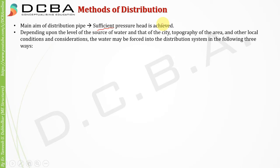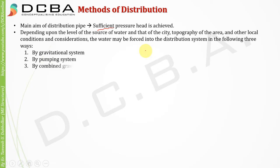Depending upon the level of the source of water and that of the city, topography of the area, and other local conditions, water may be forced into the distribution system in the following three ways: first is by gravitation system, second is by pumping system, and third is by combined gravity and pumping system. In today's lecture we will be covering these three methods.